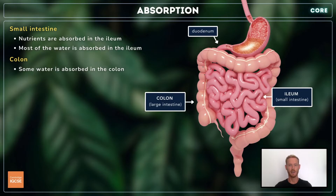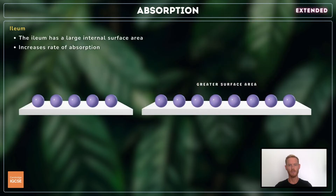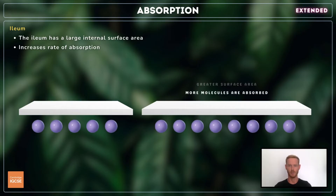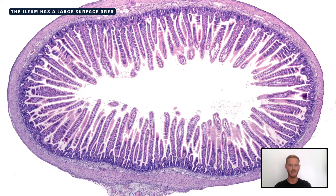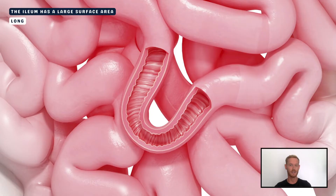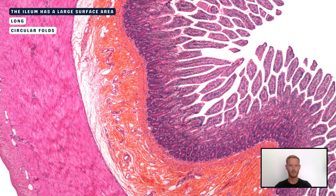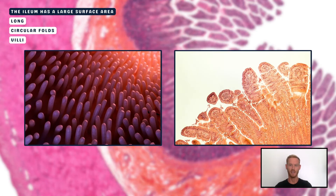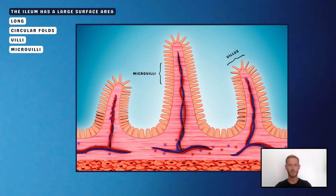For extended, you also need to know how the ileum is adapted to its role. One of the main factors that influences the rate of absorption is the area of the exchange surface. A larger surface provides more space for the molecules to move across, while a smaller surface restricts the movement of the molecules and slows down their passage. The internal surface area of the ileum is extremely large, at around 30 square meters, due to its length as well as the structure of its lining. It has circular folds and is covered with millions of tiny finger-like projections called villi. These villi are lined with epithelial cells, the outer membranes of which are covered with microvilli, that increase the surface area even more.